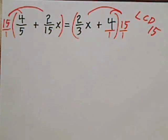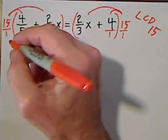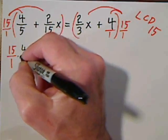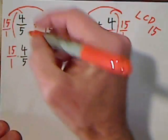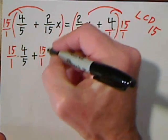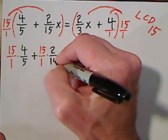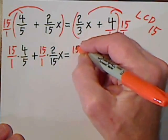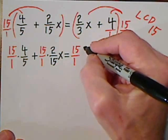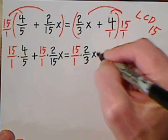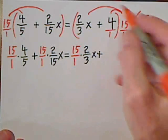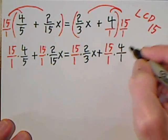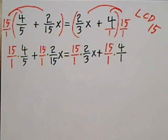All right, so I'm going to have to write like this so this will be 15 over 1 times 4 fifths plus. We have our 15 over 1 times 2 fifteenths x. And I send in 15 over 1 here times the 2 thirds x plus. And then 15 over 1 times our 4 over 1. This might seem a little silly, we don't really need that, but I'm just working at being consistent here.